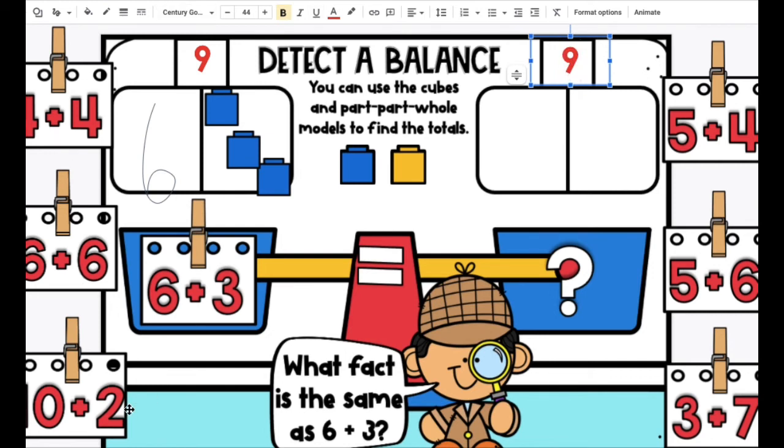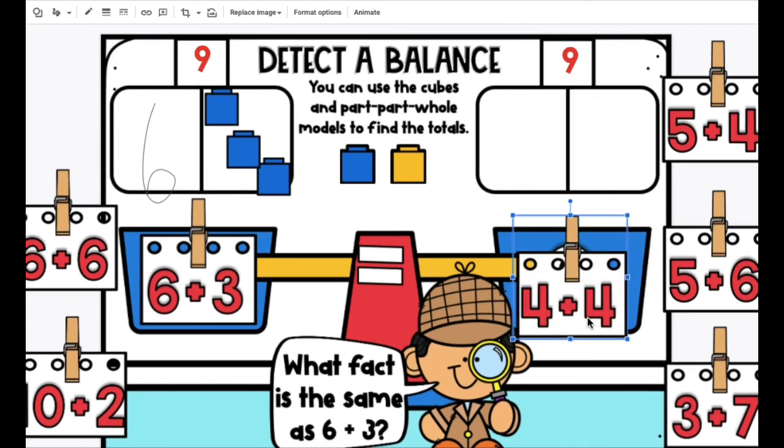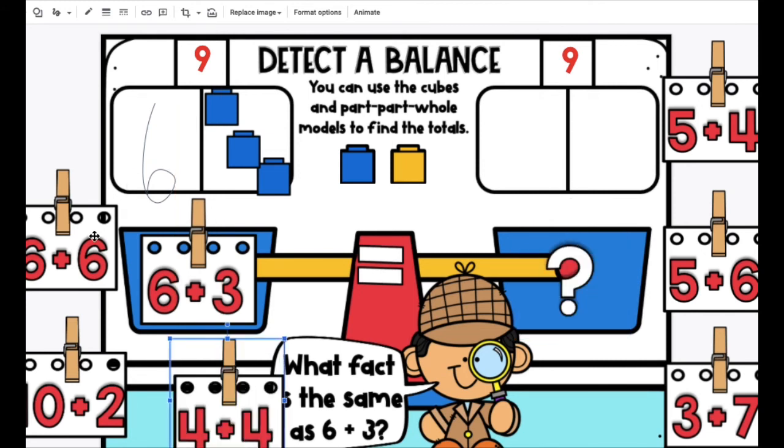Do you see a fact that I should try? Would 4 and 4 equal 9? No. 4 plus 4 is 8. And we know 6 plus 6 is 12.